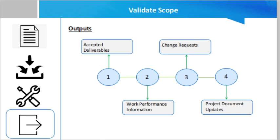Work performance information includes information about which deliverables have been started, their progress, which deliverables have been finished, or which have been accepted. The work performance information process takes place at every particular stage of the project lifecycle.